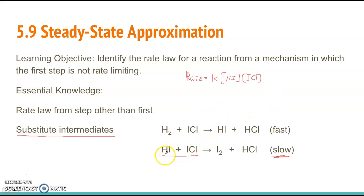Okay, but now the problem here is HI is an intermediate. It's a product in the first step, and it's a reactant in the second step. So intermediates cannot be in a rate law expression. So what we have to do is you look and see, well, where does the intermediate come from? It comes from this first step, which is fast.